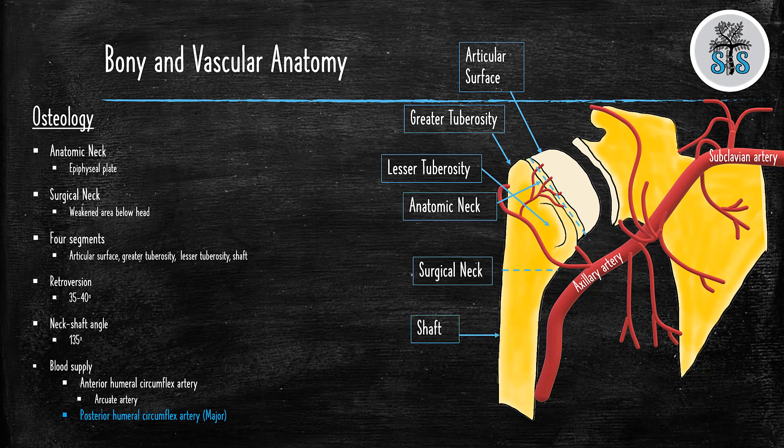Now, the humerus, unlike the femur, is actually retroverted between 35 and 40 degrees, and the normal neck shaft angle is 135 degrees.